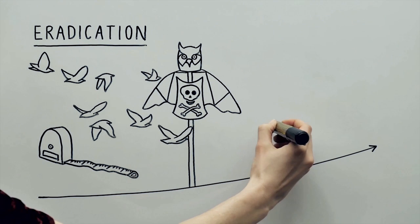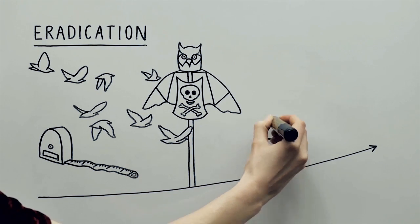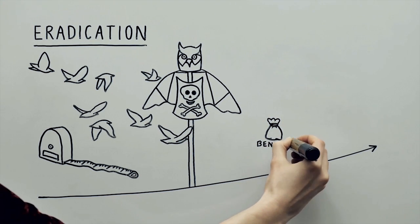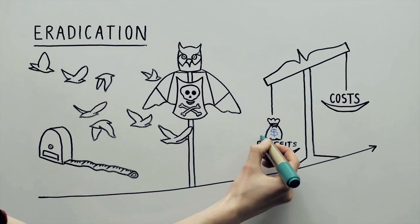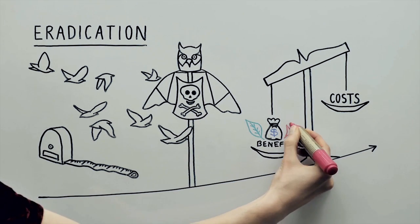For example, the economic benefits from eradicating invasive species such as starlings and Queensland fruit fly far outweighs the costs, and the environmental and social benefits can also be important.